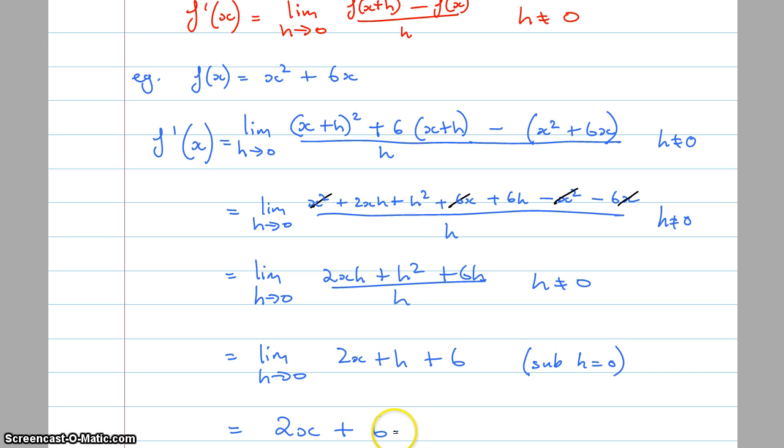So that means that I could actually find out the gradient at any particular point. I could sub x as 3, I could sub x as 5, x as whatever and I would find out the exact rate of change at that point, the exact gradient at that point.